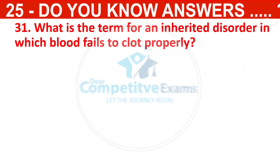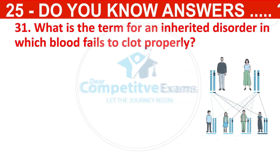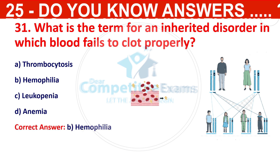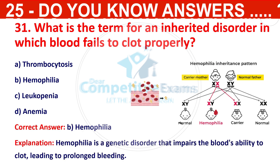What is the term for an inherited disorder in which blood fails to clot properly? The options are thrombocytosis, hemophilia, leukopenia, or anemia. The correct answer is hemophilia. Hemophilia is a genetic disorder that impairs the blood's ability to clot, leading to prolonged bleeding.